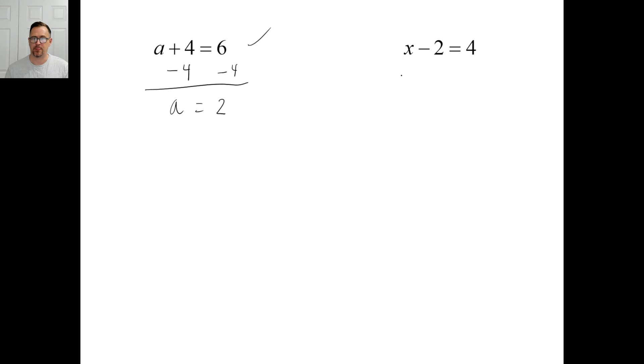For b, we're subtracting two, so we don't want that, we want a zero. So we're going to add two, the opposite, to get rid of that. So we're going to add two to this side as well. So we have x is equal to four plus two, which is six. Let's check it: six minus two is that four? Yep, works.